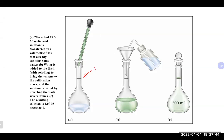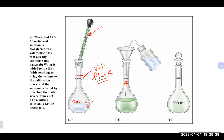A volumetric flask is used to make dilutions precisely. It's expensive and has just one calibration line representing the volume. For a 500 mL flask, fill it to the line and you have exactly 500.00 mL. To do a dilution, add a little water first, then the concentrated solution, then carefully top it off with water to the line. Put the lid on and mix.